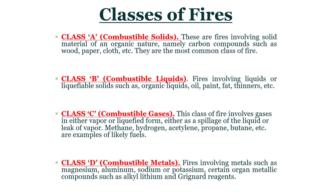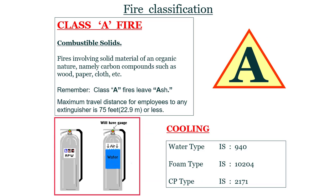Class C — combustible gases: this class of fire involves gases in either vapor or liquefied form, either as a spillage of liquid or a leak of vapor. Examples include methane, hydrogen, acetylene, propane, butane, etc. Class D — combustible metals: fires involving metals such as magnesium, aluminium, sodium, and potassium. Certain organometallic compounds such as alkyl-lithium and Grignard reagents also fall under this classification.